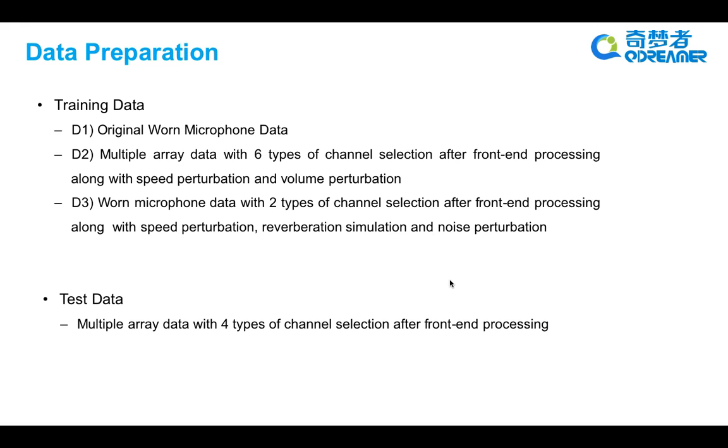The second part is the multiple array data with six types of channel selections after front-end processing, along with speed perturbation and volume perturbation, which is denoted as data 2.